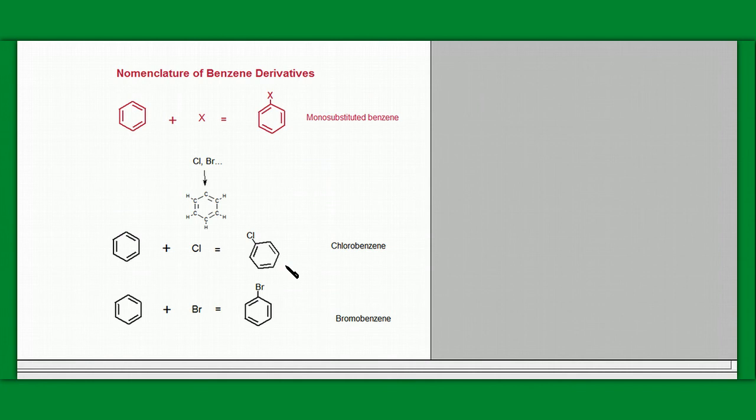As always, there are exceptions to this rule of naming. Some of the derivatives have common names which have been accepted into the IUPAC system, but they have no systematic method of naming. They are important. That's why they have to be learned, unfortunately.